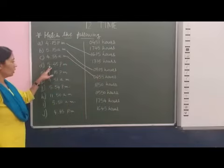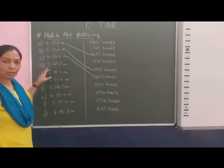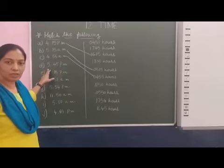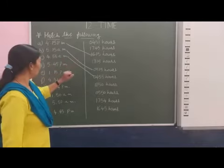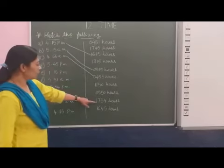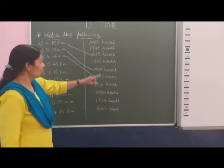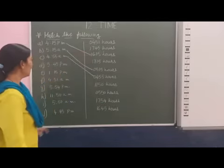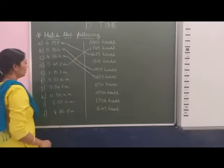Now 4:45 PM, so PM, we add by 12. 5 plus 12 equals 17 hours. So 17 hours and 45 minutes. 17 hours, it is also here 17, but it is 54 minutes. And this is the second one, 17 hours 45 minutes. So we match with this time.